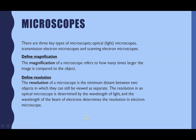The resolution of a microscope is the minimum distance between two objects at which they can still be viewed as separate. That means the minimum distance at which you can still see two different parts of a cell as separate, rather than blurred into one single point. The resolution of an optical microscope is determined by the wavelength of light, and in an electron microscope, it's the wavelength of the beam of electrons.